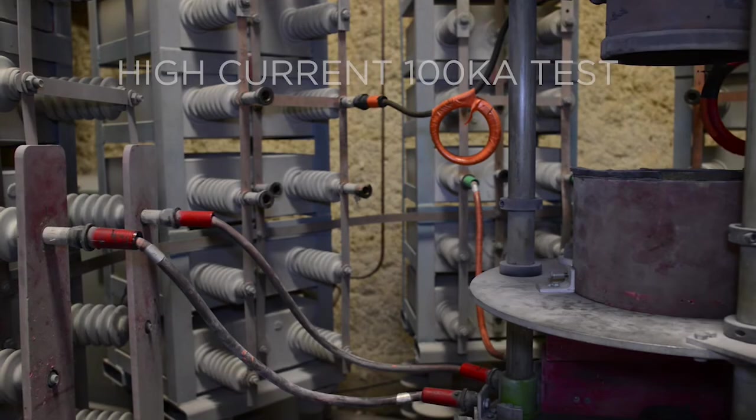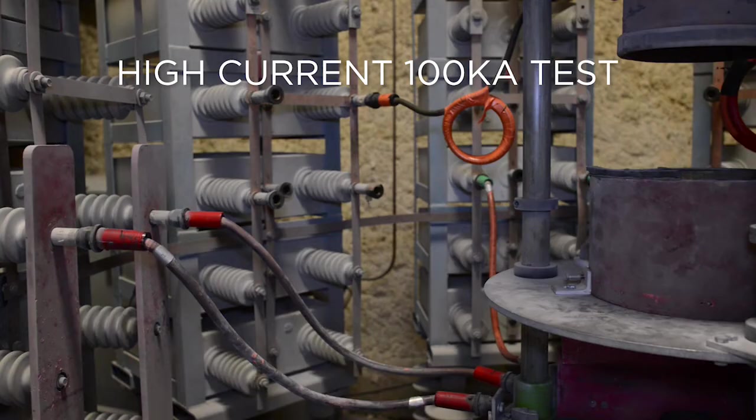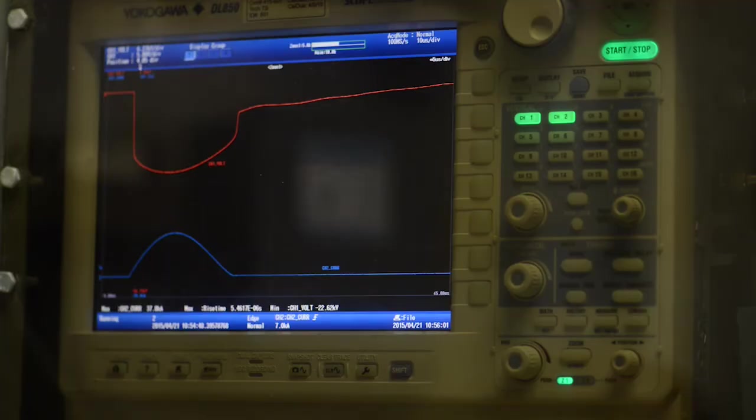At nearly 100,000 amps, the high current test hits an MOV disc with the biggest lightning impulse of its lifetime – twice. This ensures performance at the highest current impulses is consistent.